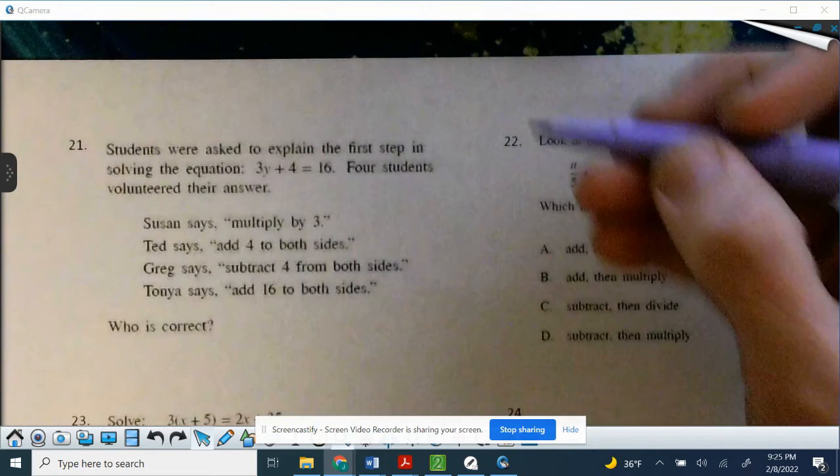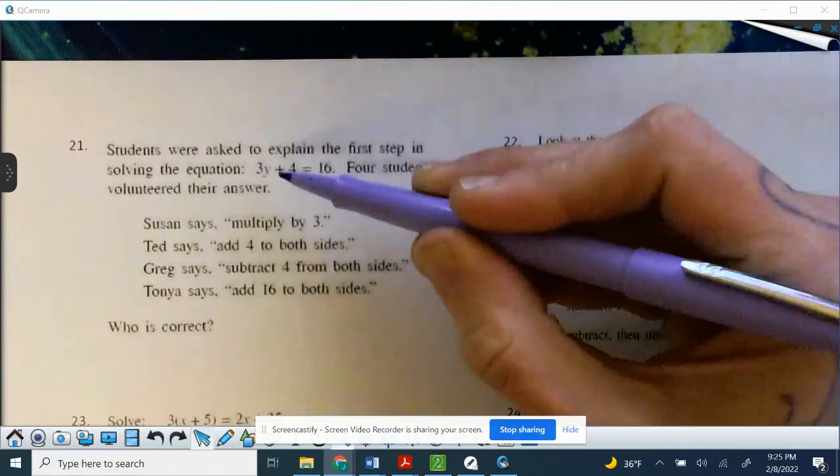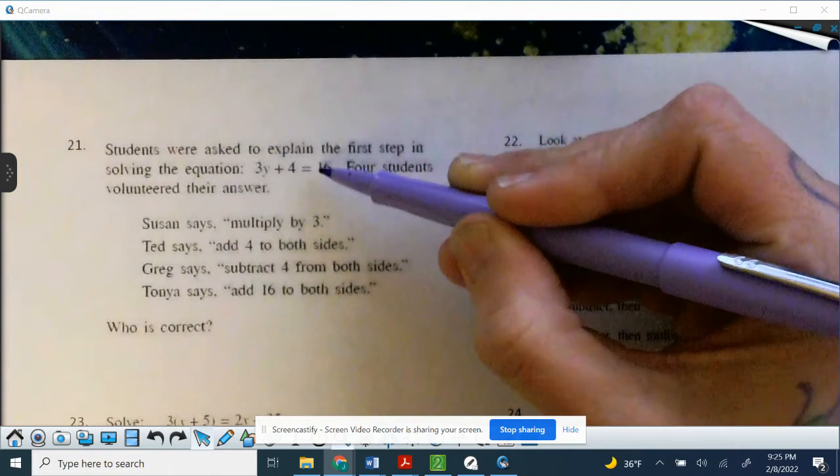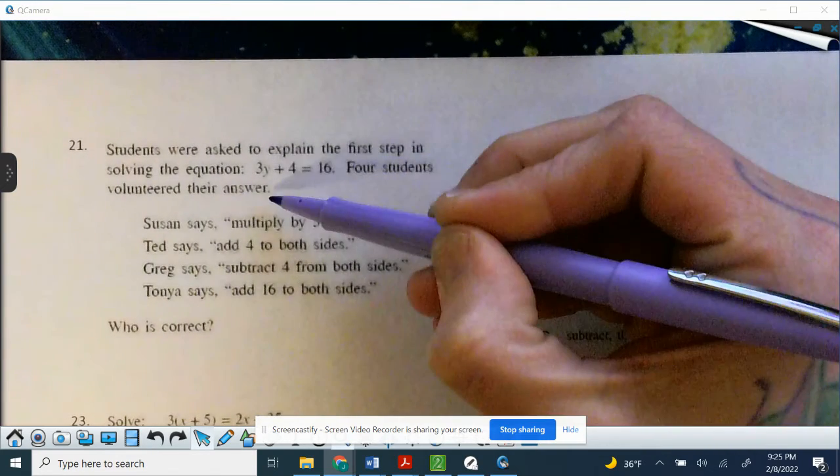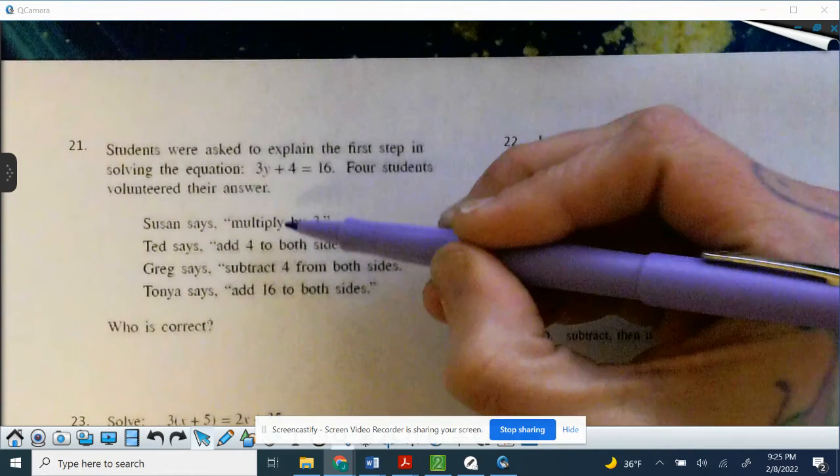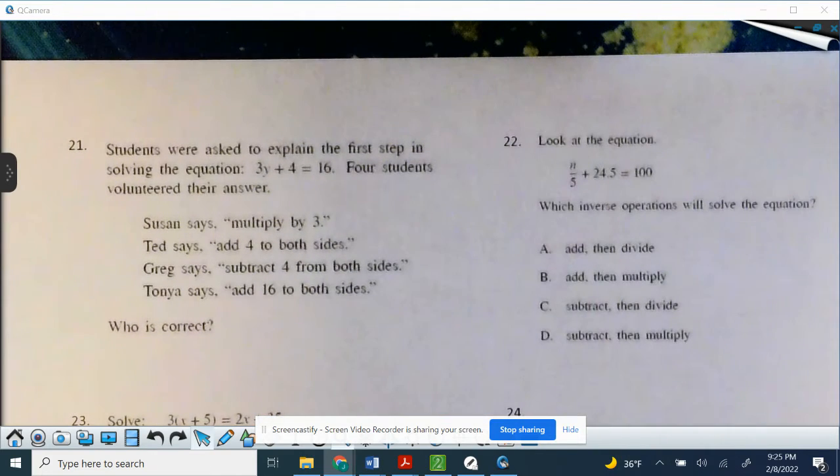Students were asked to explain the first step in solving the equation 3y plus 4 equals 16. Four students volunteered their answer. Susan says multiply by 3. Ted says add 4 to both sides. Greg says subtract 4 from both sides. And Tanya says add 16 to both sides.